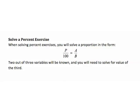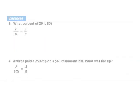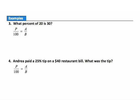Solve a percent exercise. When solving a percent exercise, you will solve a proportion in the form p over 100 equals A over B. Two out of the three variables will be known, and you will need to solve for the value of the third. In all our percent proportions, we get three of these values known — for example, we may know the percent and the base but need to find the amount. The next examples will show how to solve for that unknown variable.